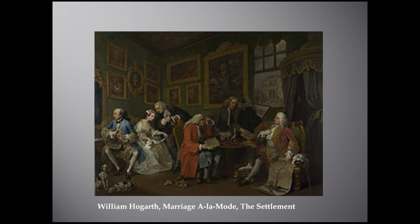The son views himself in a mirror, showing where his interest in the matter lies — he's self-absorbed and doesn't really care. The distraught merchant's daughter is consoled by the lawyer while polishing her wedding ring. Even the faces on the walls appear to have misgivings, almost like they're watching this event unfold and realizing how disastrous this union is going to be. Two dogs chained to each other in the corner mirror the situation of the young couple — this idea of arranged marriages without love.